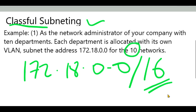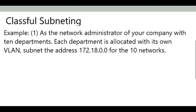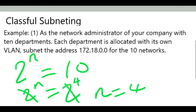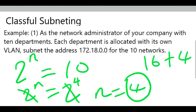The next thing is to determine the new subnet mask or the custom subnet mask that will be suitable for 10 networks out of this slash 16. To calculate the number of bits we need to borrow on the host side, we say 2 to the power n equals 10, where n is the number of bits to borrow. 2 to the power 3 is 8, which is less than 10, so we use 2 to the power 4, which is 16. Therefore n equals 4, meaning we borrow 4 bits, and our default slash 16 plus 4 gives us a slash 20.